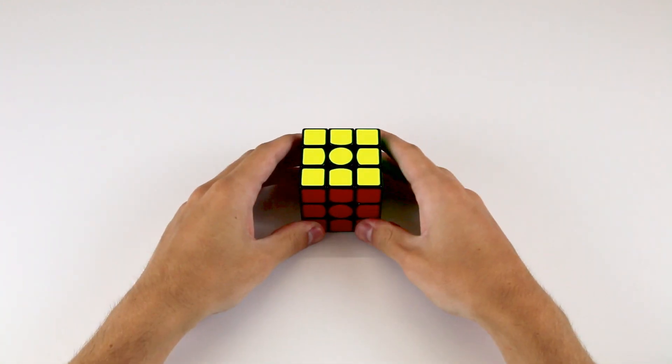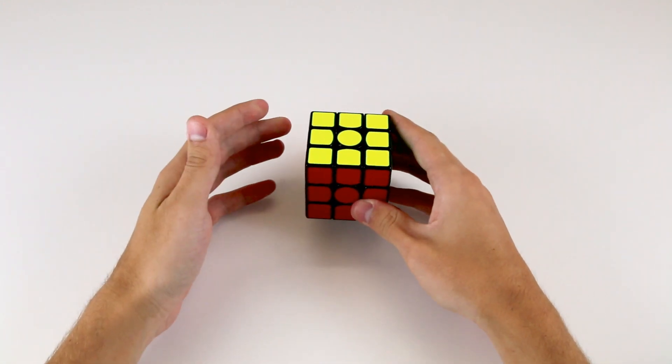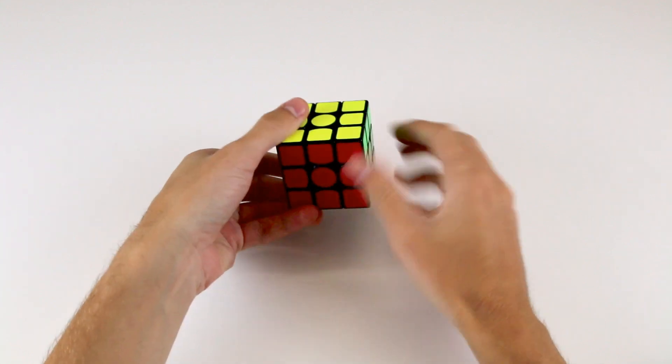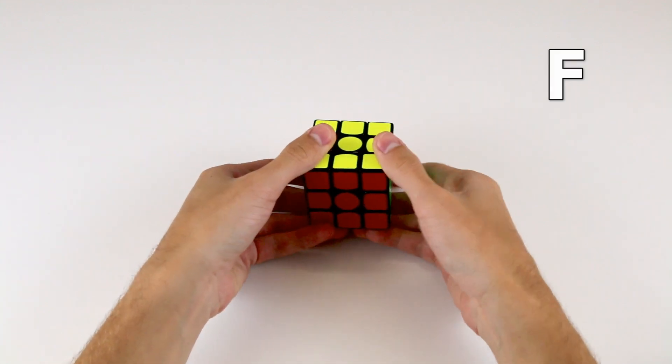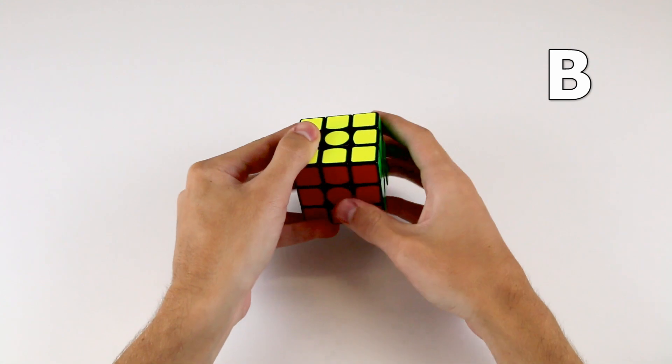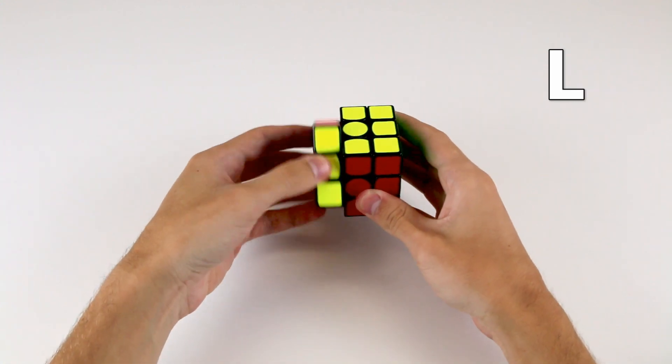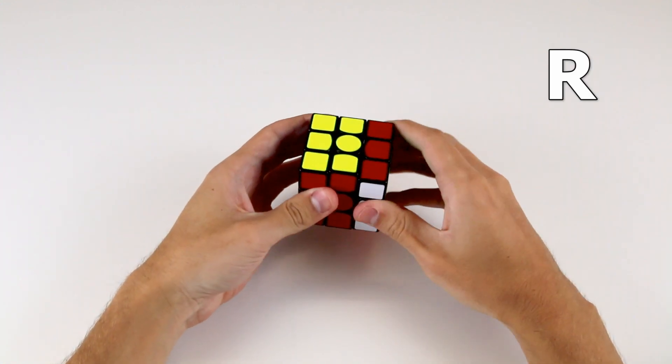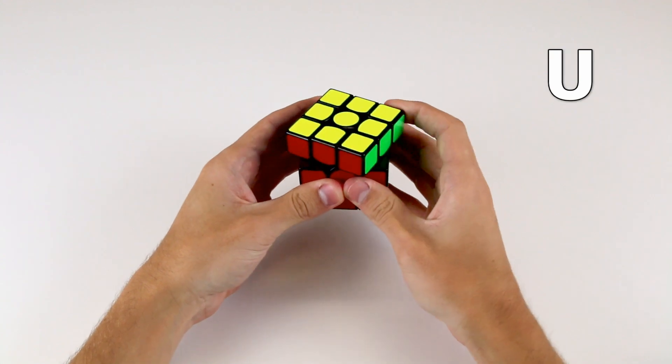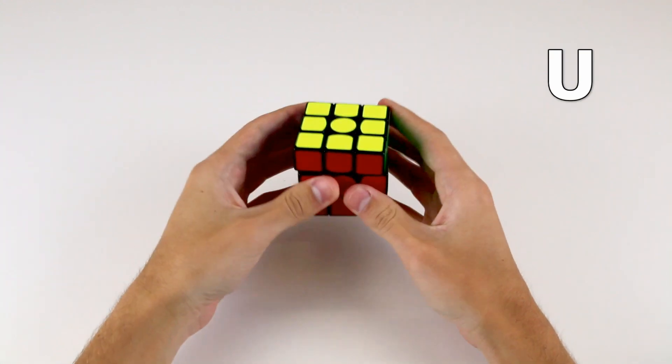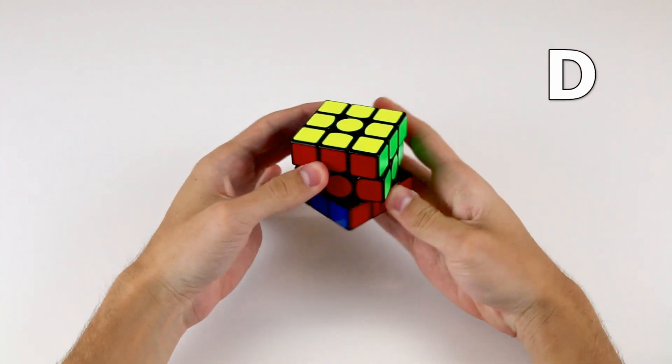And to help make our lives easier, we denote the sides with the following letters. So, F is for front, B is for back, L is for left, R is for right, U is for up or top, and D is for down or bottom.